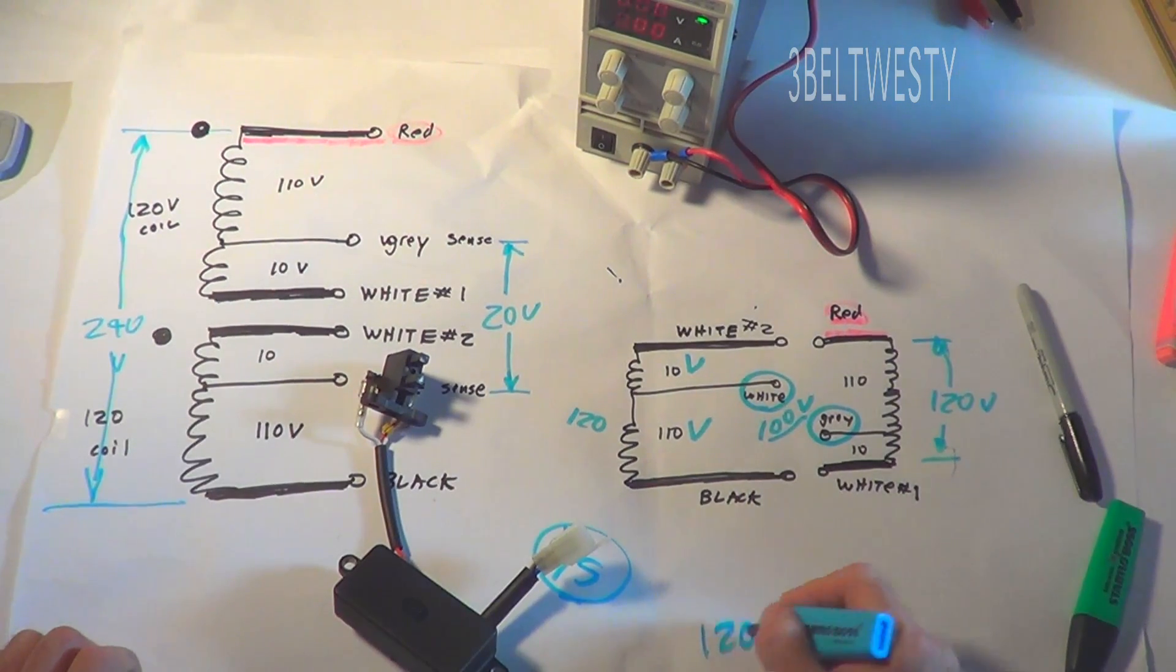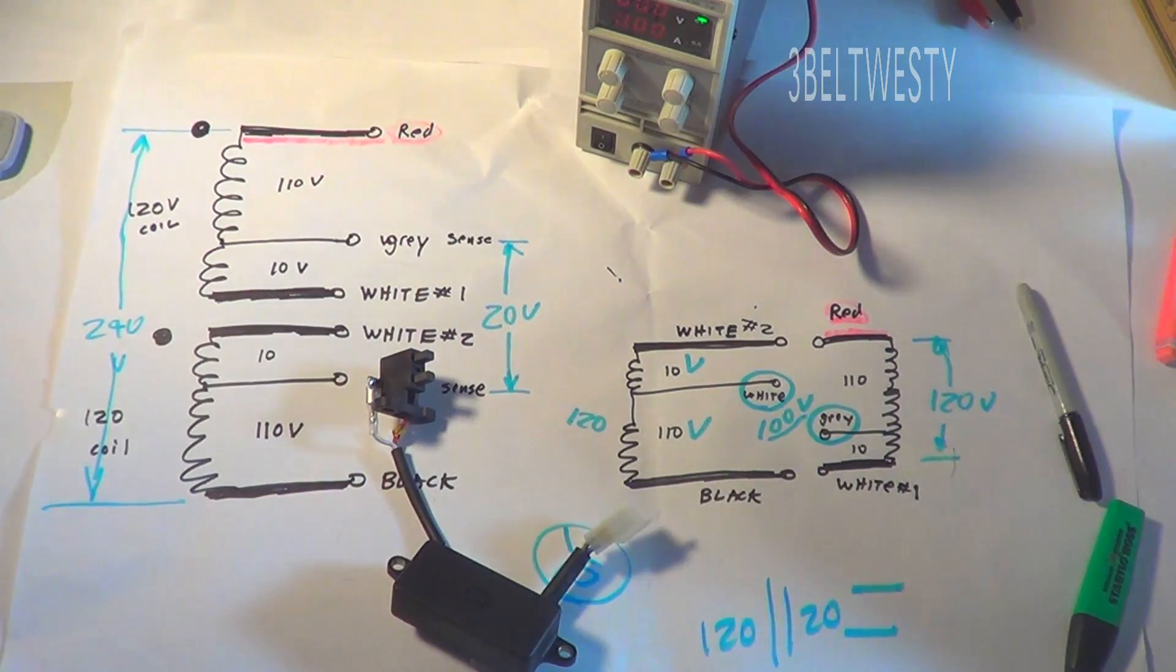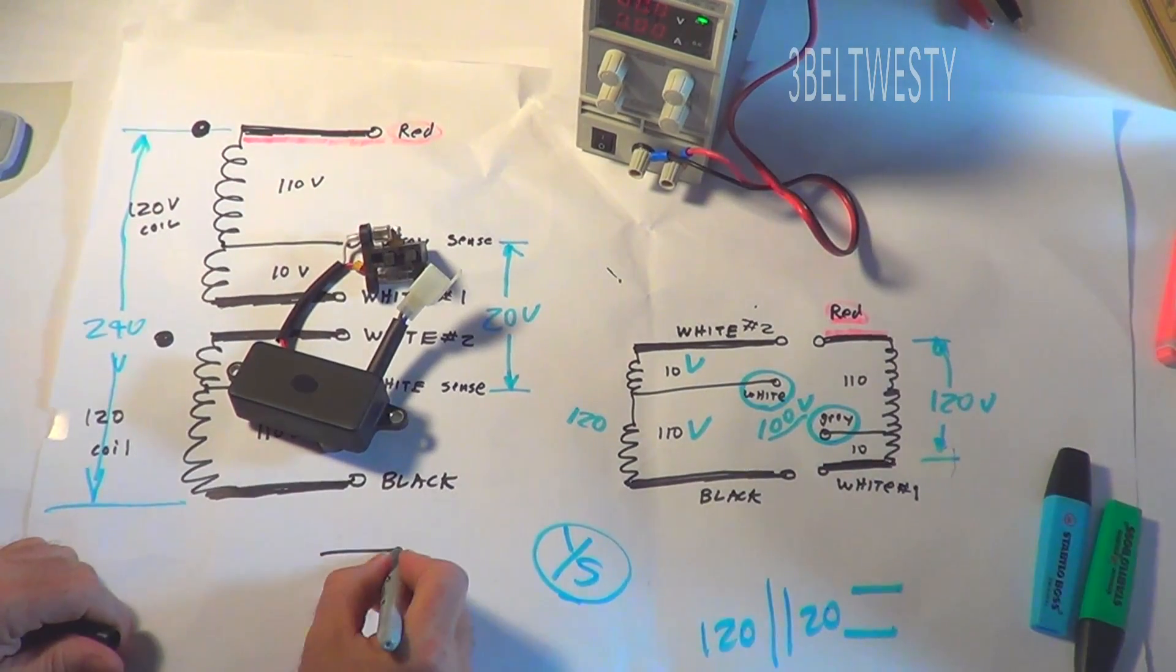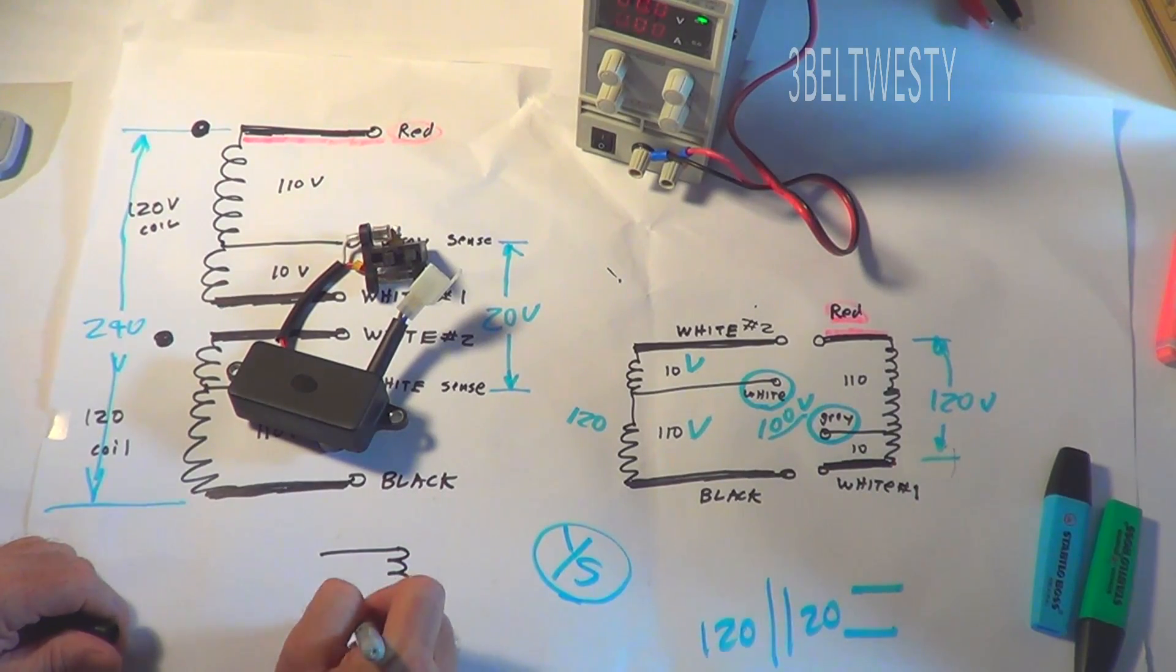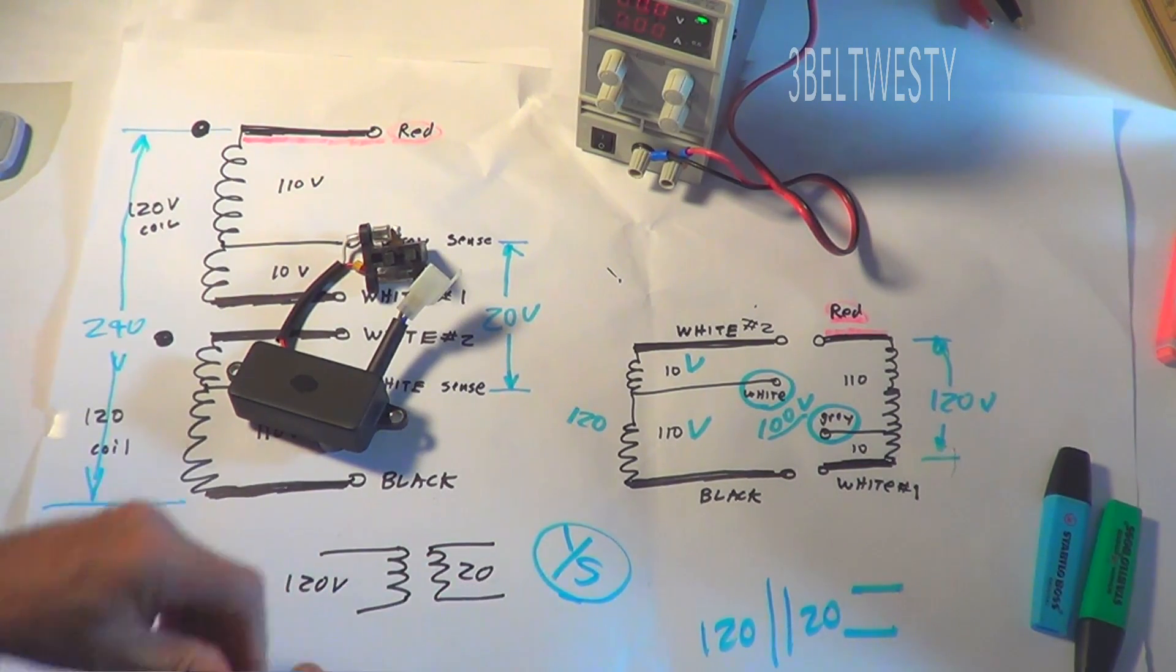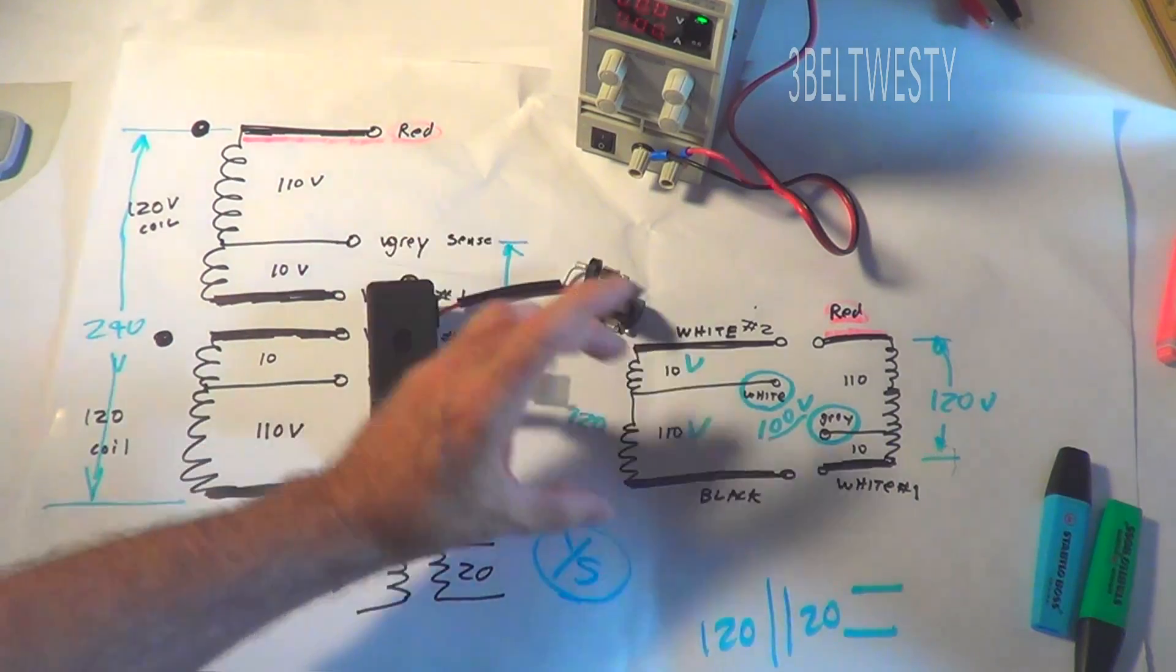You have a 120 volts to 20 volt transformer that you go ahead and you power this with. So if you take another transformer, 120 volts in, roughly 20 out, and then you feed this. And the 120 volts is hooked across this.